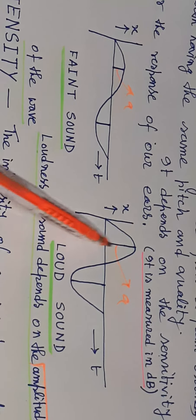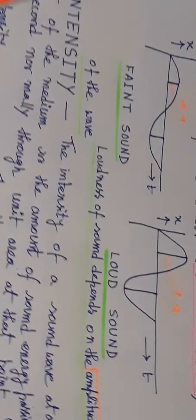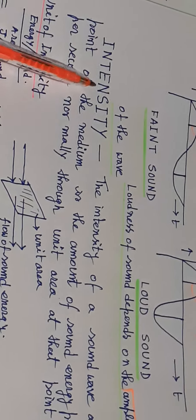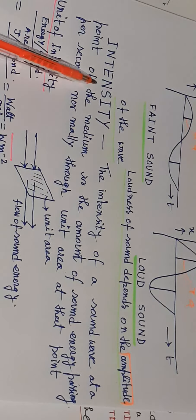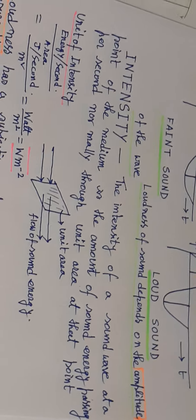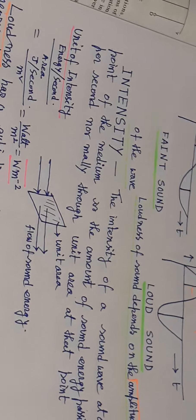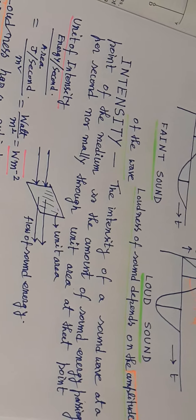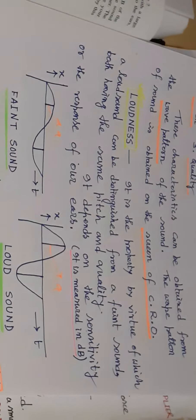Loudness of sound depends on the amplitude of the wave. When amplitude is high, it is a loud sound; when amplitude is low, it is a faint sound. Loudness has a subjective nature, while intensity is objective. Intensity is measured in relation to loudness but is a measurable quantity.